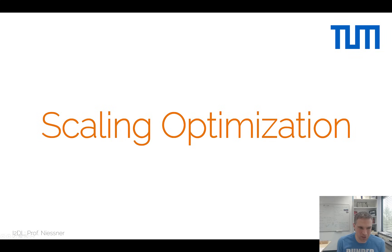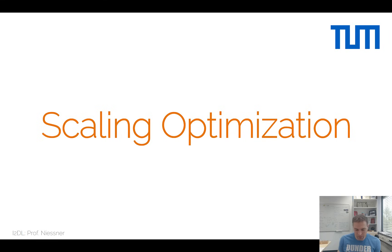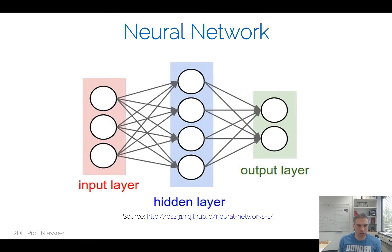Hello and welcome everybody to Introduction to Deep Learning. Today we're going to continue with training and optimizing neural networks — specifically the methods we need to choose in order to find the optimal parameters given a certain training set. As a quick recap from previous lectures, we now know the structures of neural networks: input layers, hidden layers, output layers, and the neurons that connect these layers.